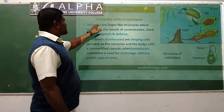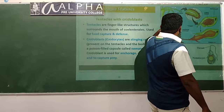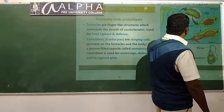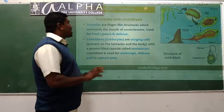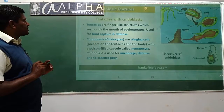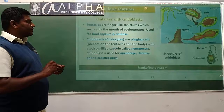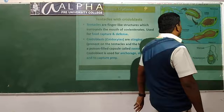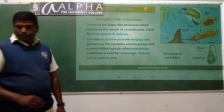The unique features are they contain tentacles with nidoblasts - arm-like structures. These are specialized cells which surround the mouth, used for food capture and defense. They contain specialized cells called stinging cells present on the tentacles, with a poisonous-filled capsule called nematocytes. The nidoblast is used for anchoring, defense, and to capture prey.